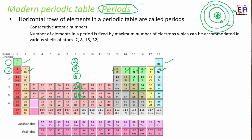Using the formula 2n², the K shell (n=1) can hold 2 electrons, the L shell (n=2) can hold 8 electrons, and the M shell (n=3) can hold 18 electrons. Each shell consists of one or more sub-shells, and each sub-shell consists of one or more atomic orbitals.